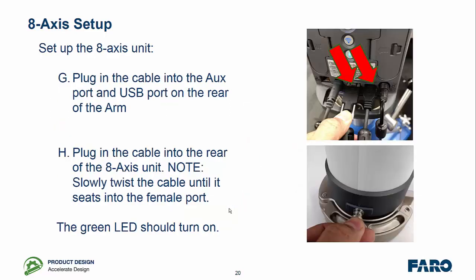We then plug in the auxiliary cable and the USB to the rear of the arm and then plug the cable into the rear of the 8-axis unit. Notice it's a twist connection, so twist it gently until it just pops into place. And at that point, as long as your arm is on, the green LED should turn on.